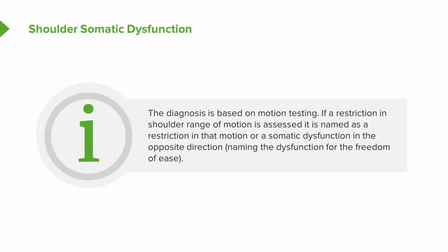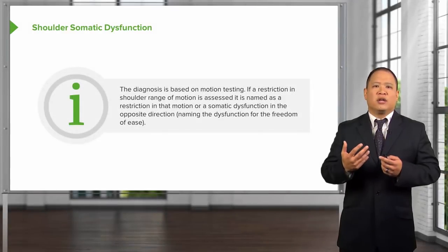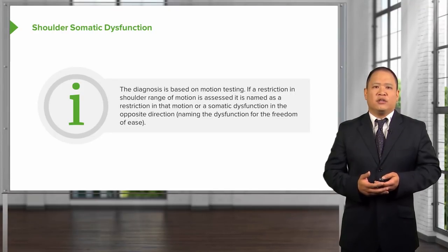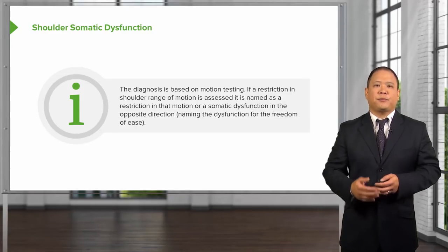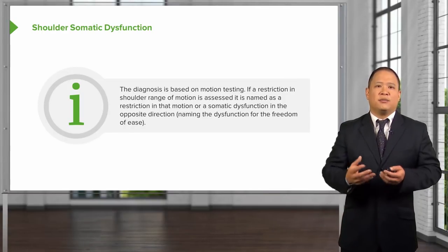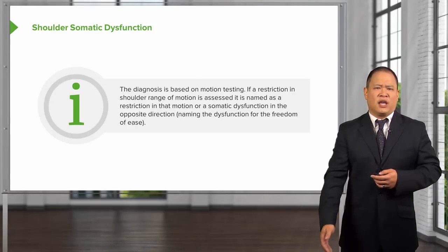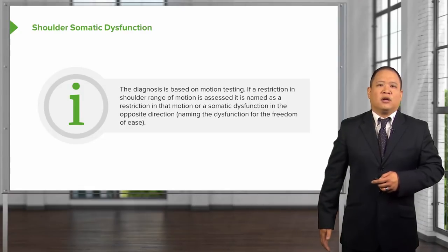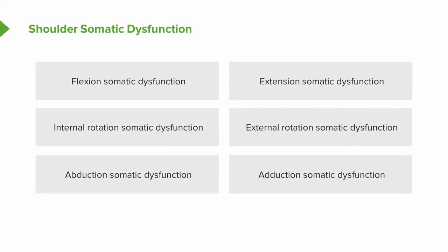If you find a restriction in range of motion testing, this helps with diagnosing a shoulder somatic dysfunction. Remember, a somatic dysfunction is a restriction of motion, and we name it for its position of freedom and ease — not the direction of restriction. So if the shoulder is restricted in flexion, we do not call it a flexion somatic dysfunction; instead, we call it an extension somatic dysfunction. Possible shoulder somatic dysfunctions include flexion or extension in the sagittal plane, internal or external rotation in the transverse plane, and abduction or adduction in the coronal plane.